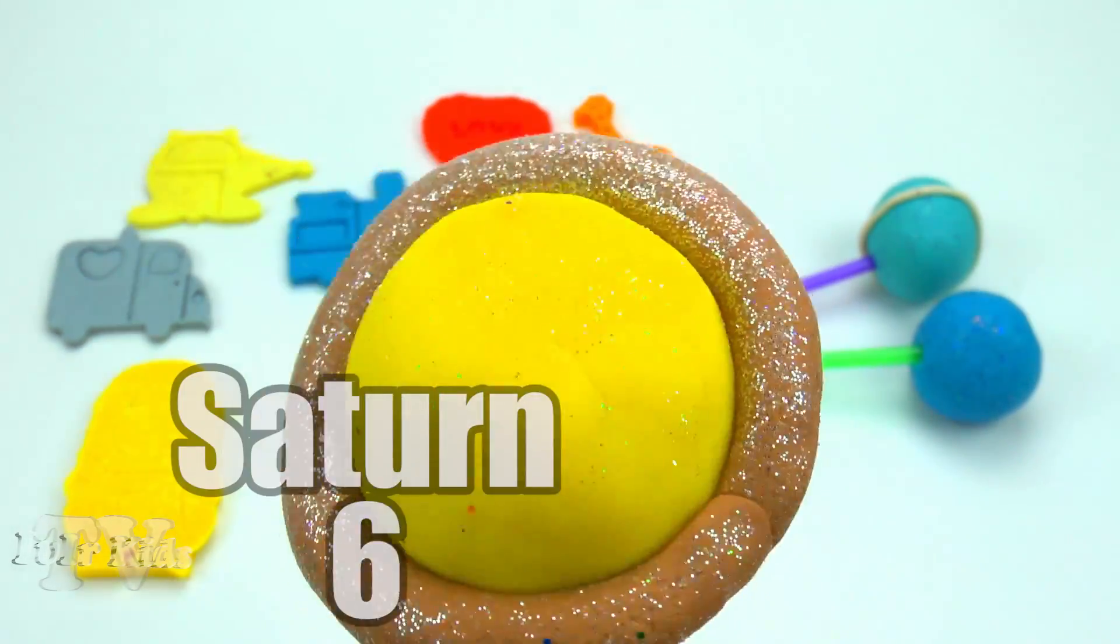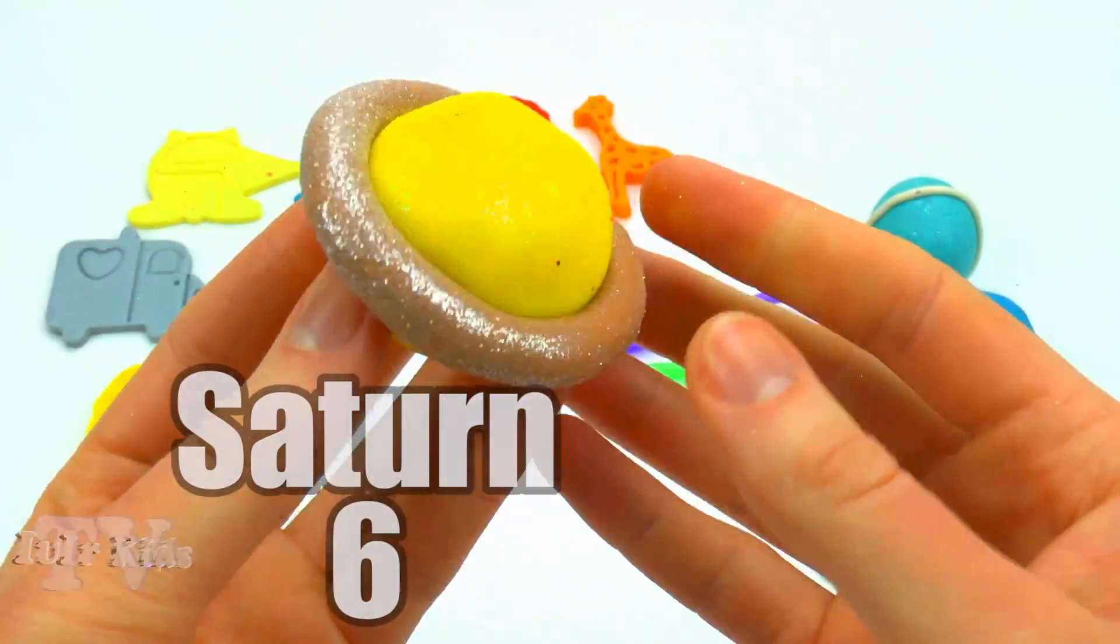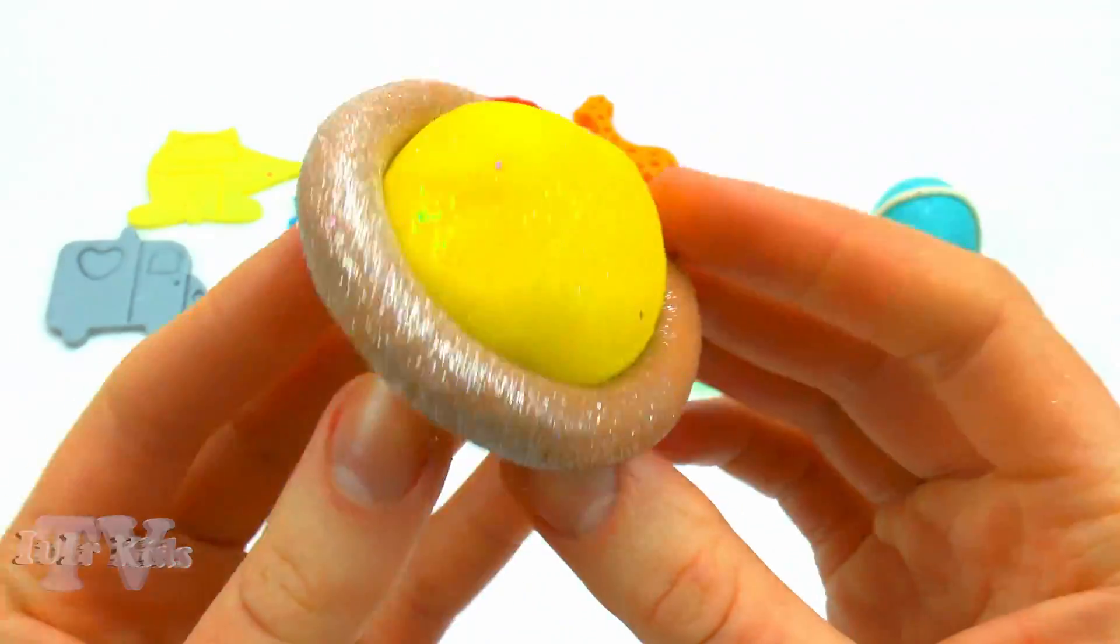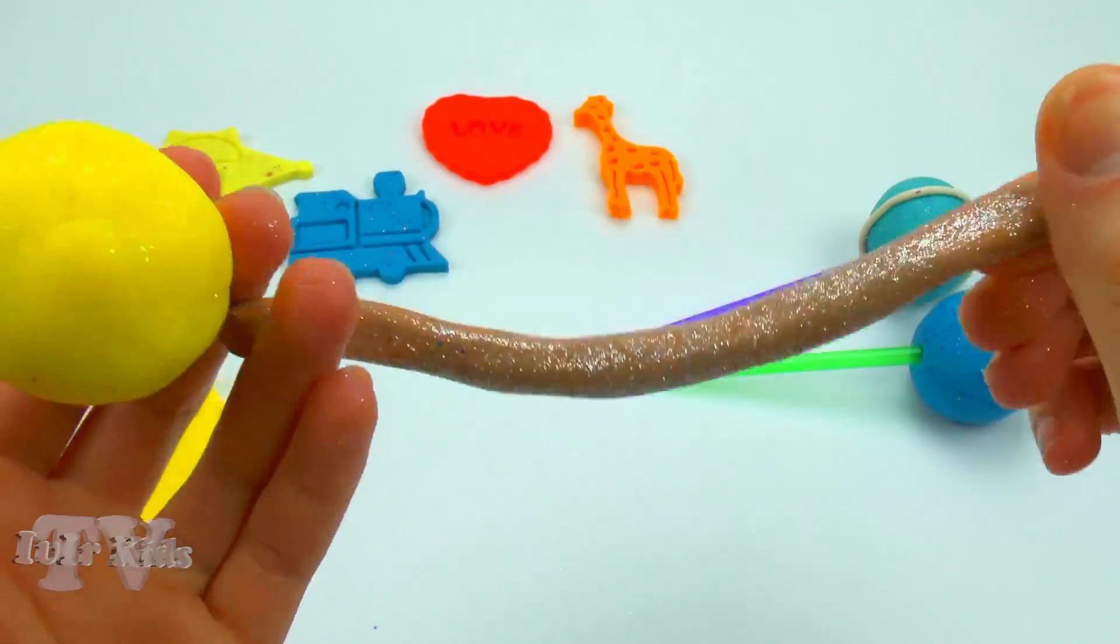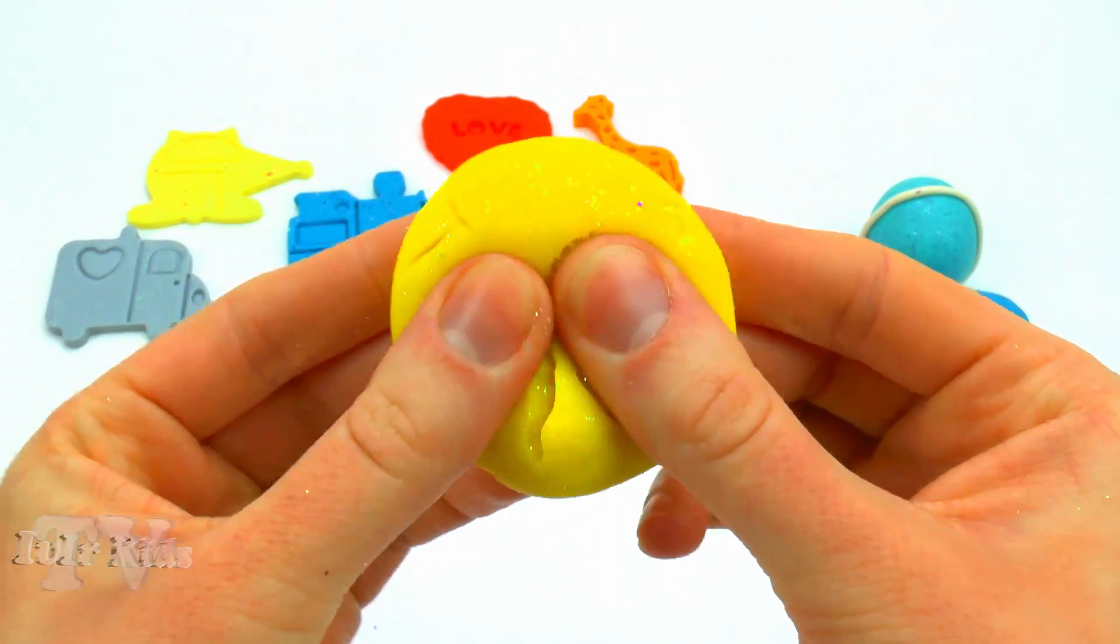Saturn. Saturn is the sixth planet from the Sun and the second largest planet in the solar system after Jupiter. This is a gas giant. Saturn is named after the Roman god of agriculture.